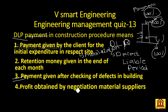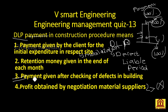The fourth option — profit obtained by negotiation with material suppliers — belongs to the contractor's own work and is not related to DLP. So the answer is a payment given after checking all defects in the building after some period of time. The third option is the answer for this question.